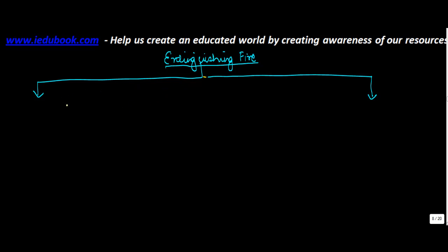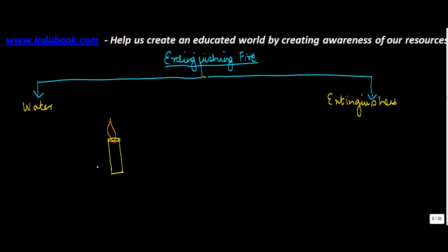Extinguishing fire means blowing it off. This can be achieved through water, or you can also have fire extinguishers which can be used to extinguish fire. Have you ever seen — let's say you have a candle with a flame. When you sprinkle water over it, you notice that the fire goes off.